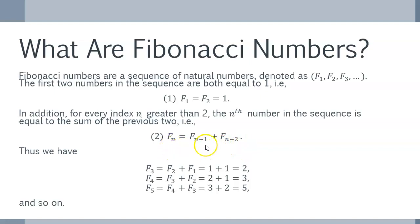So, Fn is equal to Fn minus 1 plus Fn minus 2. So, for instance, F3 is equal to F2 plus F1, which is 1 plus 1, or 2. F4 is F3 plus F2, which is 2 plus 1, or 3. F5 is F4 plus F3, which is 3 plus 2, or 5, and so on.